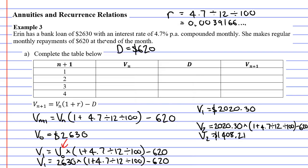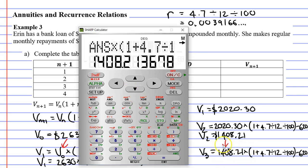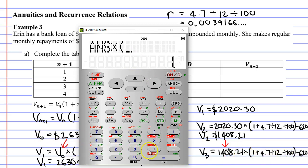Let's now find V_3. What we need to do is take the previous result, $1,408.21, and perform the same calculations next to it that we have been doing previously. When we bring up our calculator, we already have this amount on there, and even better than that, it hasn't been rounded. So we're going to keep going on with our calculation: times bracket 1 plus 4.7 divide 12 divide 100, close our brackets, and subtract the 620, giving us $793.73.